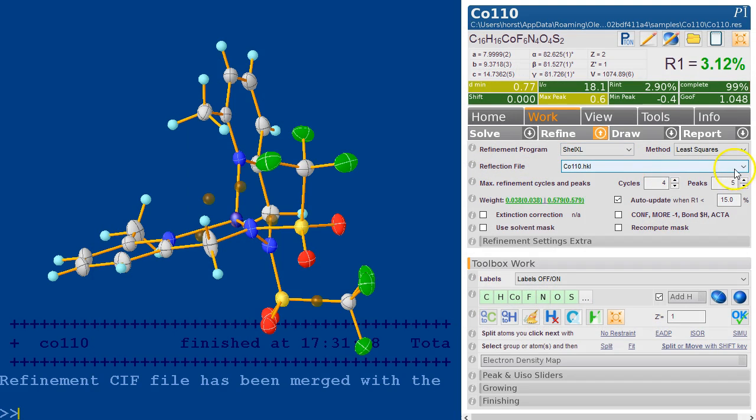This means you could have a number of different hkl files against which you refine. It doesn't matter what it's called. It will copy it into that temporary folder and it will then manage everything by itself.